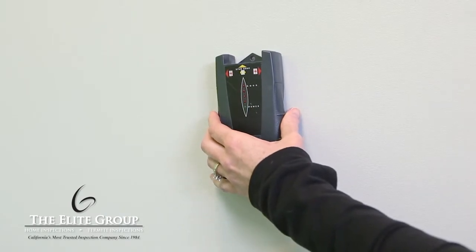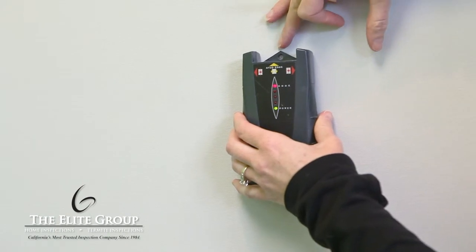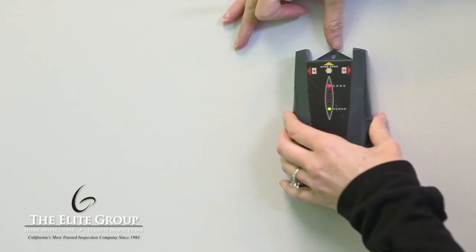First, hold it flat against the wall and press and hold the calibration button. Wait until the lights are green and there is no beeping. Slowly slide it along the wall.